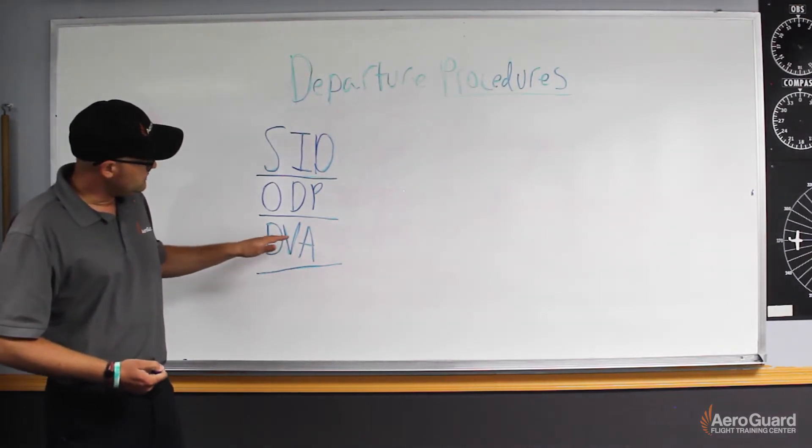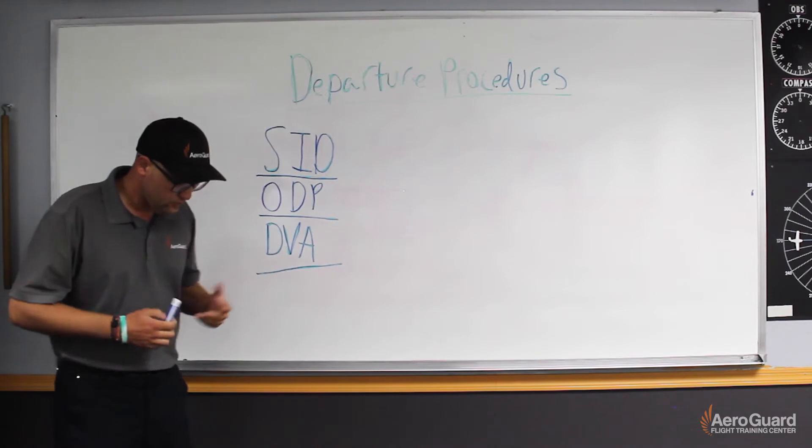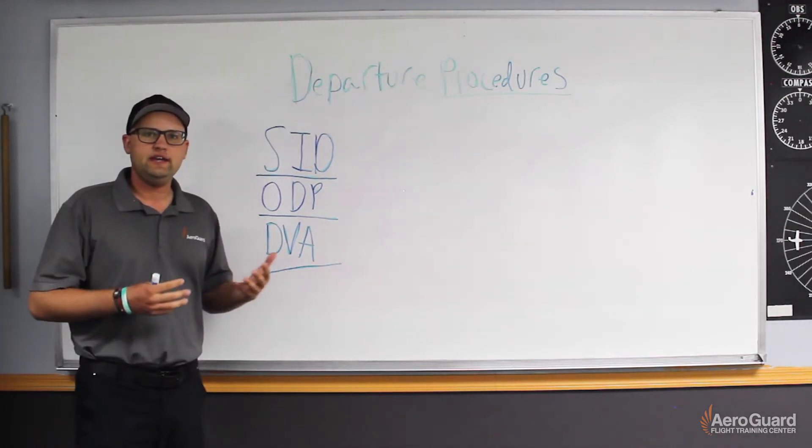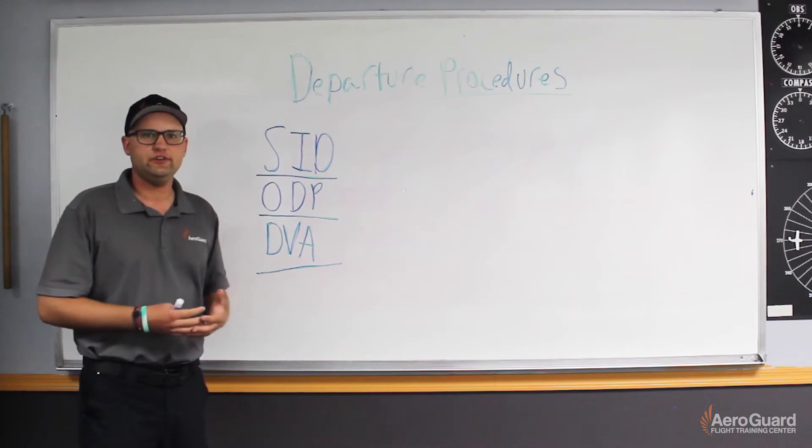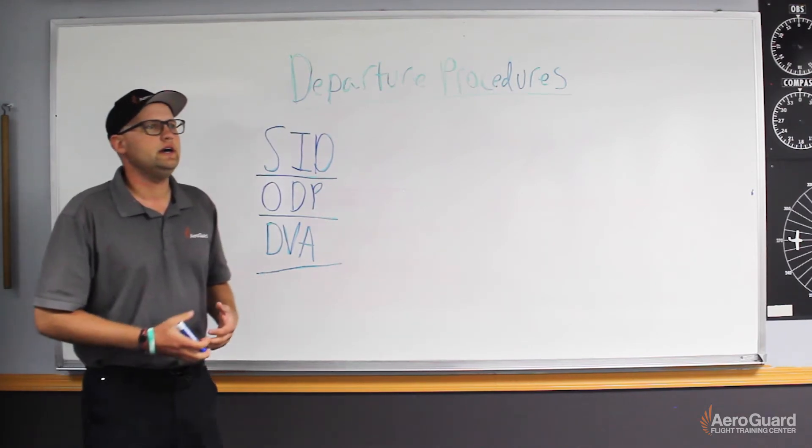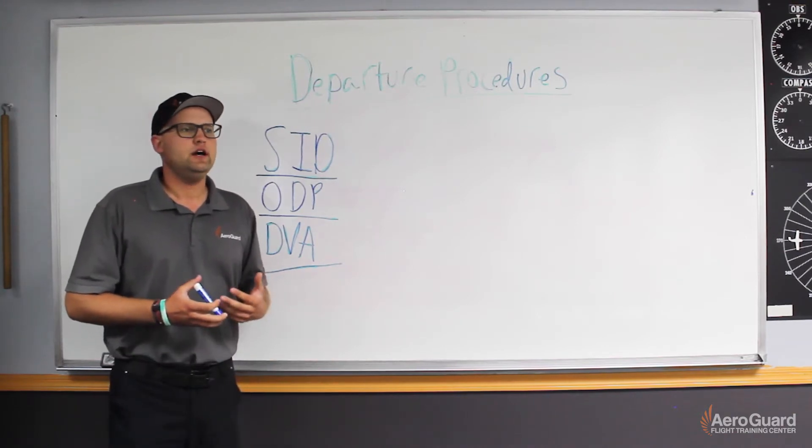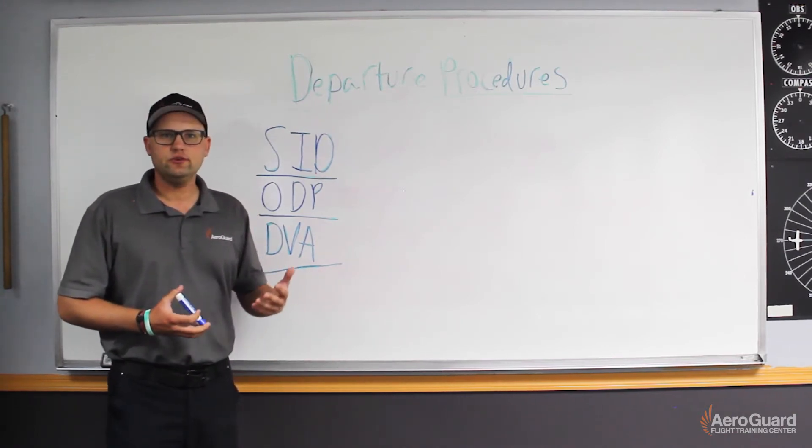Diverse vector area. The next one is the diverse vector area. Diverse vector area is assigned headings given by ATC on departure. So let's say, for example, we're going to take off from 2-5 left here, Deer Valley.